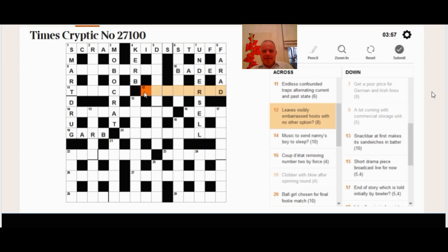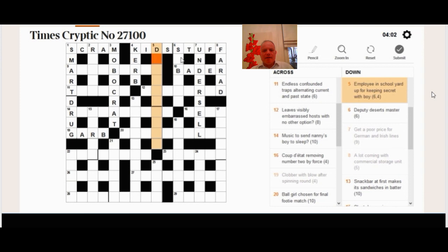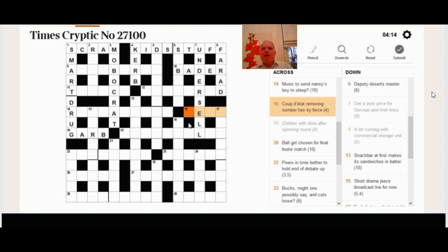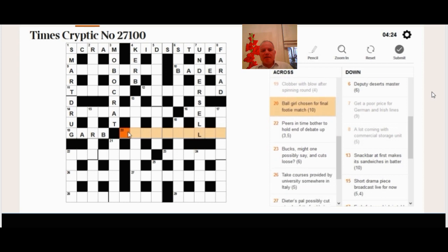Leaves visibly embarrassed hosts with no other option. I mean, just astonishing. Leaves visibly embarrassed hosts with no other option. And it turns out, that's one of the last ones I saw, that there the leaves are referring to a sheaf of paper. Leaves of paper. And visibly embarrassed is a reasonably standard piece of crosswordese. Thank goodness. Although in that case it's in red.